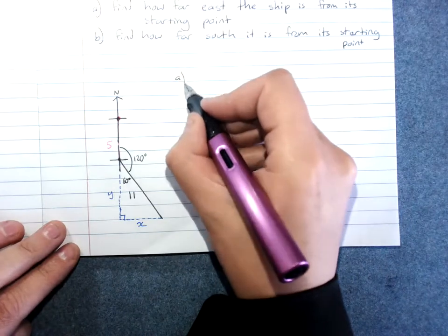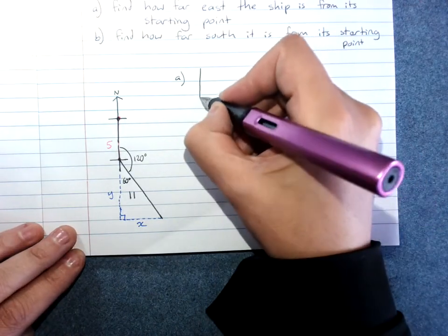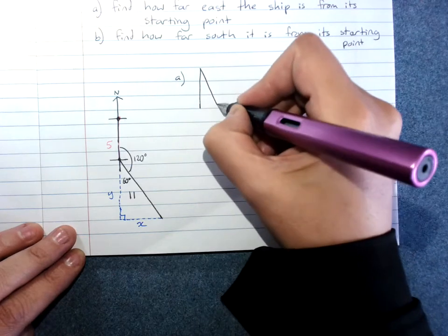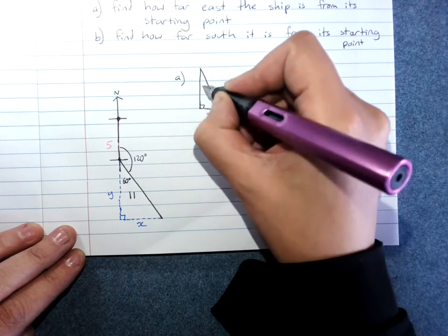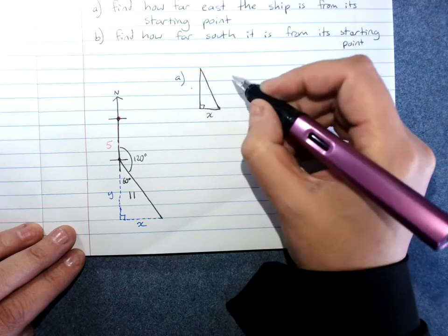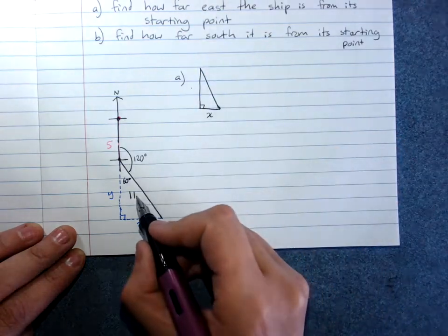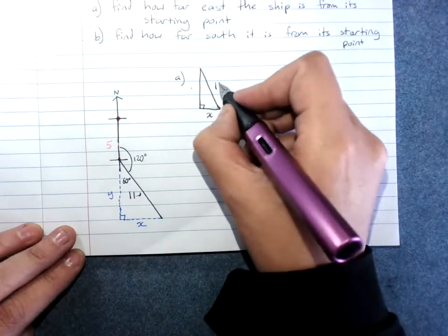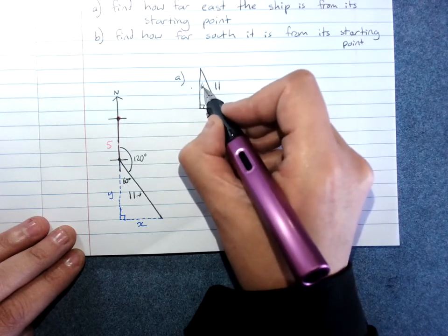So A, I would then redraw your triangle. It is not a good idea to try to rely on your navigation diagram. That's 11 there. 11, and I've got 60 degrees.